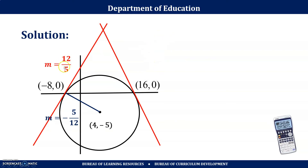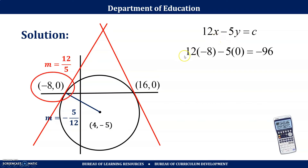Since I have the slope 12/5 and the point (−8, 0), I can get the equation of this tangent line. The form is 12x − 5y = c. Substituting (−8, 0): 12(−8) − 5(0) = −96. Therefore the first tangent line equation is 12x − 5y = −96.